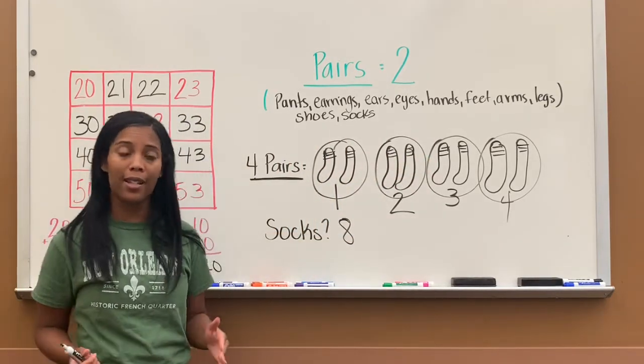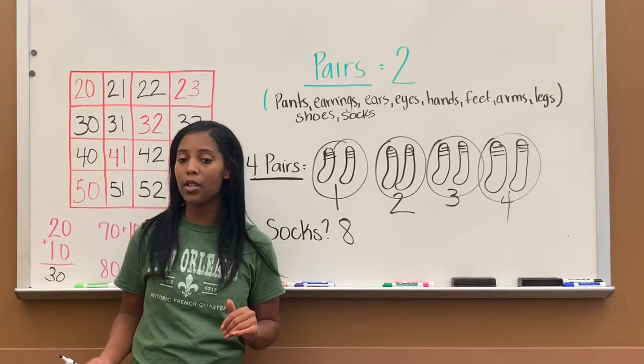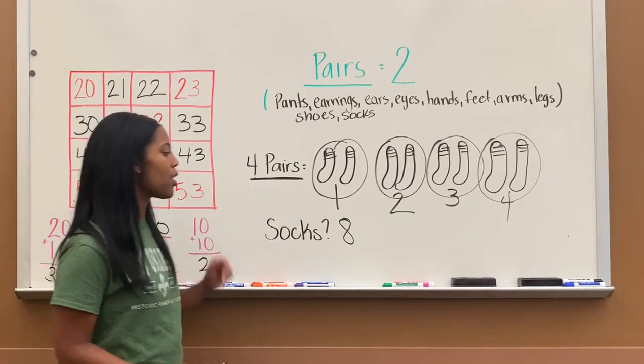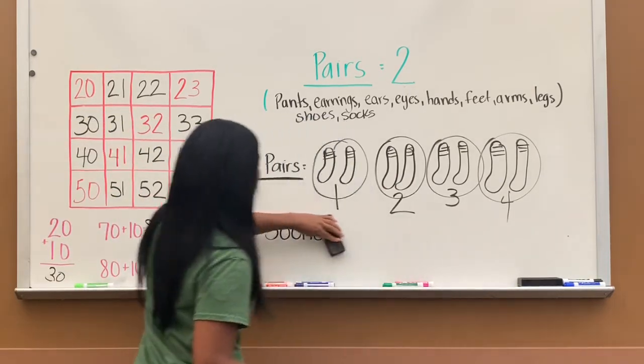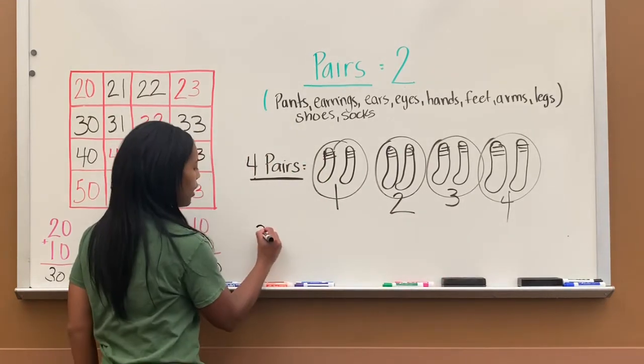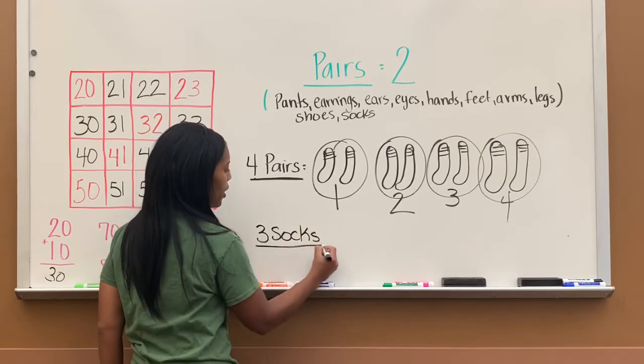So sometimes the book will ask, it will say, can you draw seven socks? Circle the pairs. Or it will tell you exactly how many pairs you need to draw. So say if the book told me to draw three socks, circle the pairs. So now the book is saying draw three socks. Now let's circle the pairs. So let's draw three socks. So one, two, three.